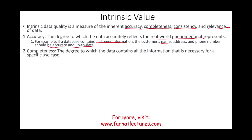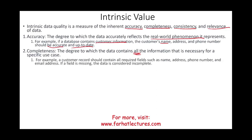Two: completeness. The degree to which the data contains all the information that's necessary for the specific use case. For example, going back to the customer data, the customer record should contain all required fields such as name, address, phone number, and email. If we're analyzing addresses and we don't have all the addresses — the field is missing — the data is considered incomplete and is of low quality.